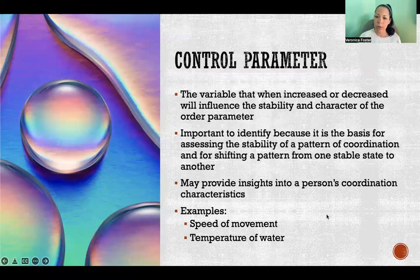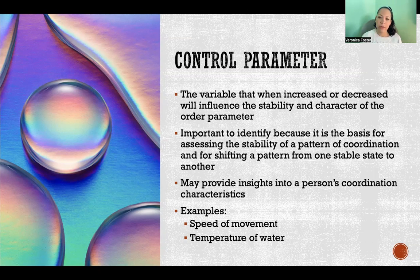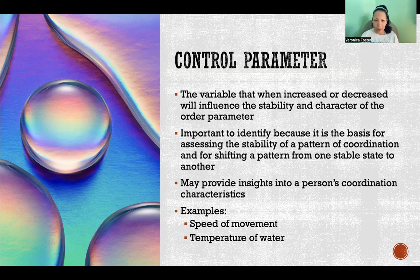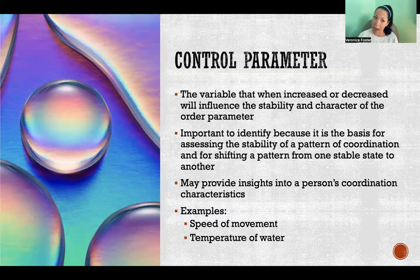A control parameter is the variable that when increased or decreased will influence the stability and character of the order parameter. For example, if we are boiling water, the control parameter would be the temperature — the order parameter is basically whether the water is boiling or not, and that's influenced by the temperature. In coordination and motor control, it's important to identify the control parameters because it's the basis for assessing the stability of a coordination pattern and for shifting a pattern from one stable state to another.